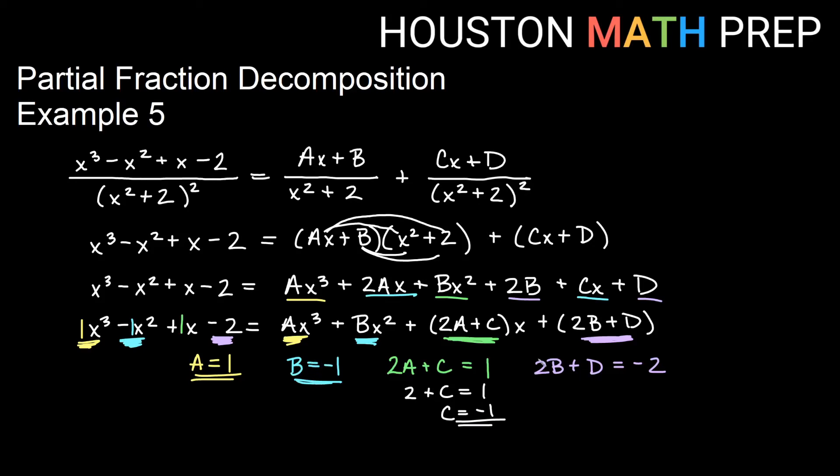And now plugging in the b equals negative 1 over here is going to help me solve d. So if I have b times 2, that will give me negative 2 plus d equals negative 2. And this one, it looks like when I add 2 to both sides, I get that d is 0. So actually, that in our expression won't be there. We won't have a d there. So let's write what we have.